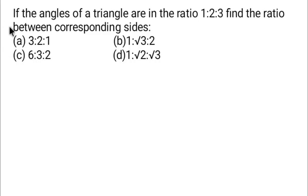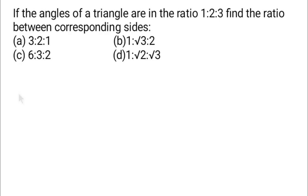Hello guys, welcome back to Solution Mitra. Here is the question for today: if the angles of a triangle are in the ratio 1:2:3, find the ratio between corresponding sides. We have given options A, B, C, and D. We have to find the ratio of corresponding sides of this triangle.